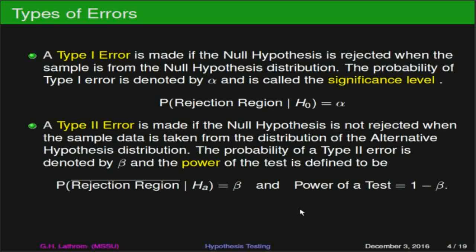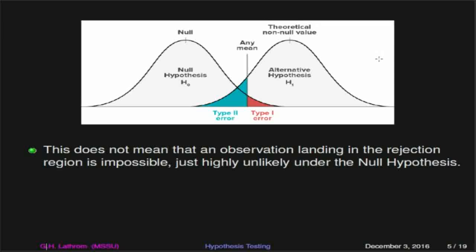This graph gives us a pretty good example of what we're looking at. We have a null hypothesis distribution and an alternative hypothesis distribution. We're choosing the type 1 error — our significance level — so that it's the probability of having some value in the null hypothesis be really extreme, really not likely under the null hypothesis. That's indicated by the pink/red/orange area shown here. The important thing to remember is that it is not impossible for a value to land in the rejection region under the null hypothesis — it is just really unlikely. Unlikely, not impossible.